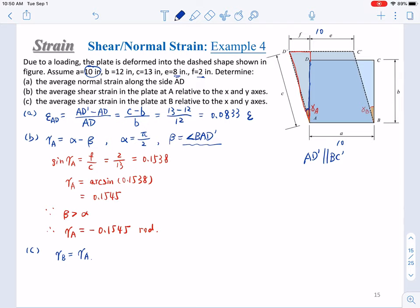Let's look at the angle at point B. Before deformation is pi over 2, after deformation is the angle, alpha equals pi over 2 and beta smaller than pi over 2. So here, because beta is smaller than alpha, gamma B equals positive 0.1545 radian.